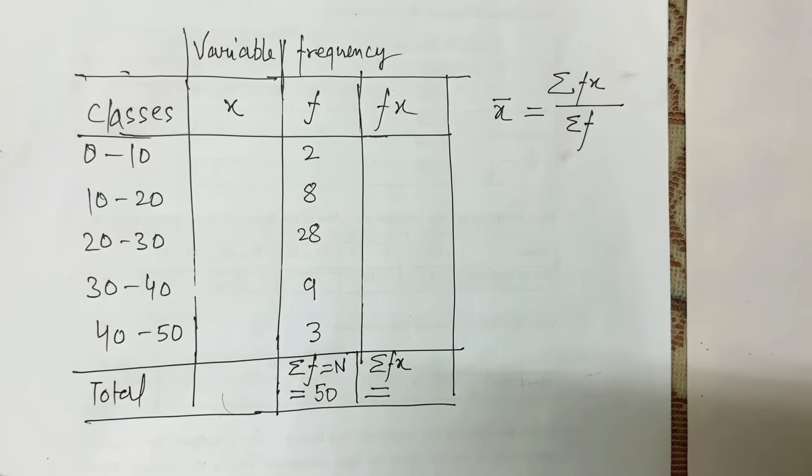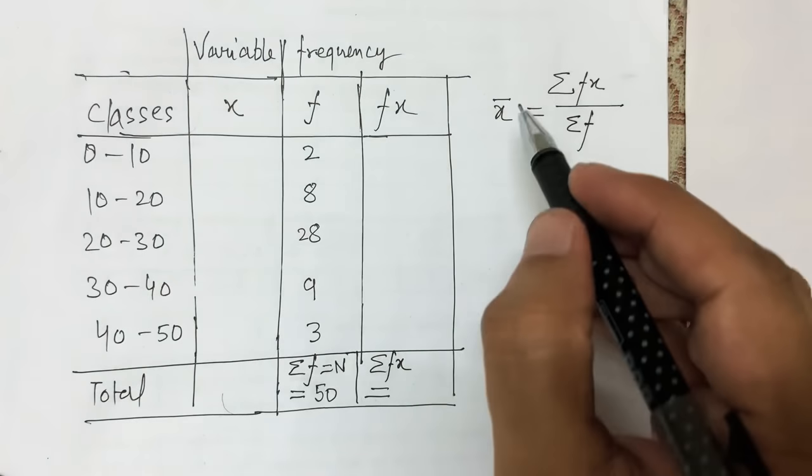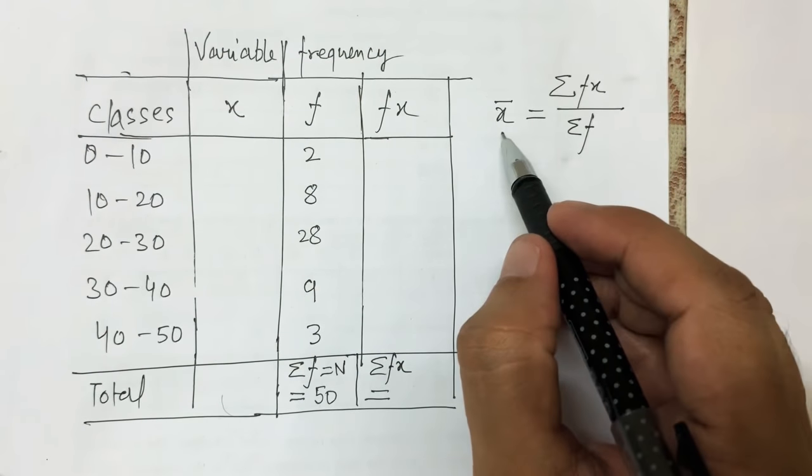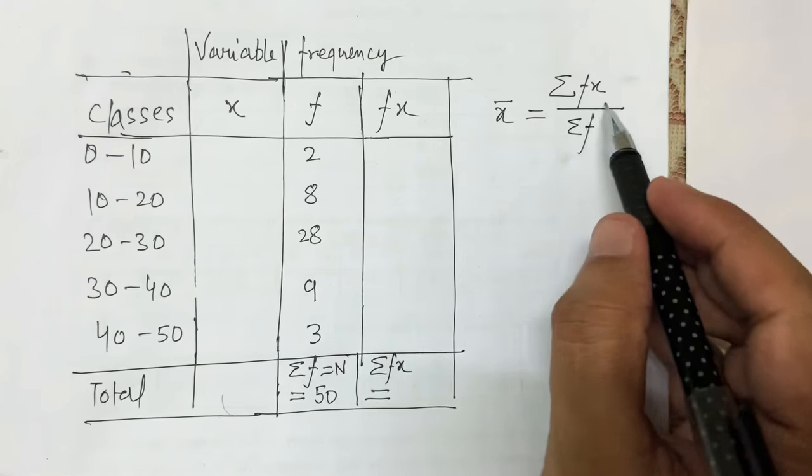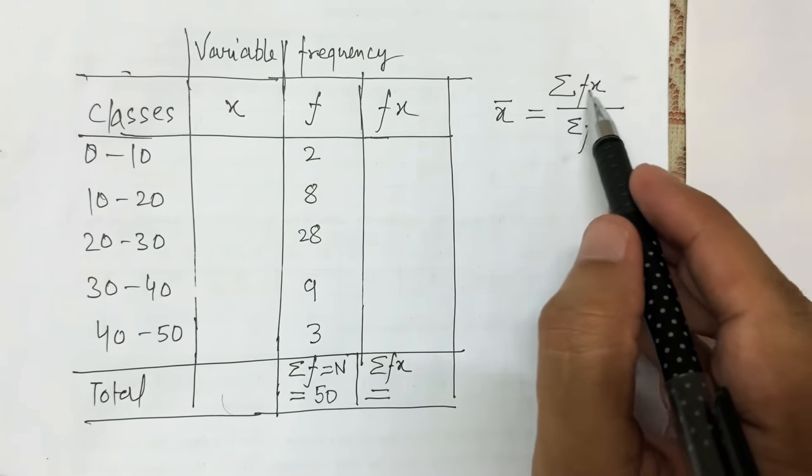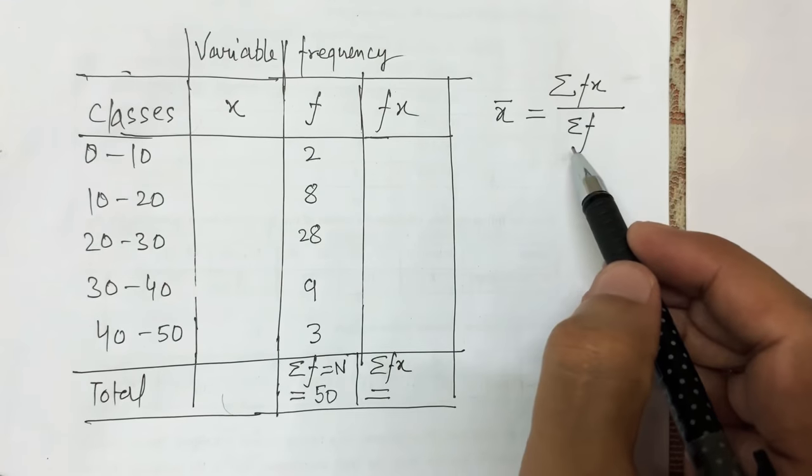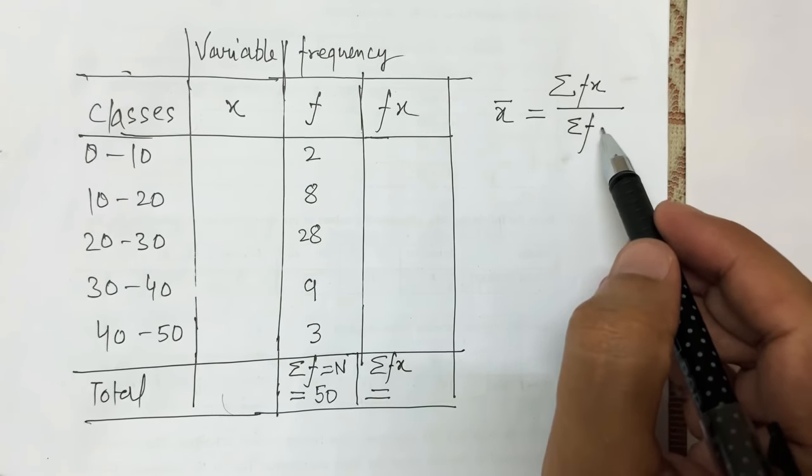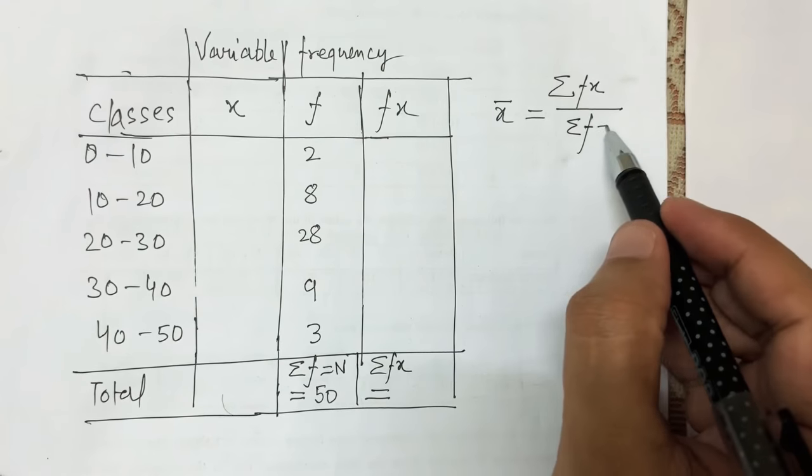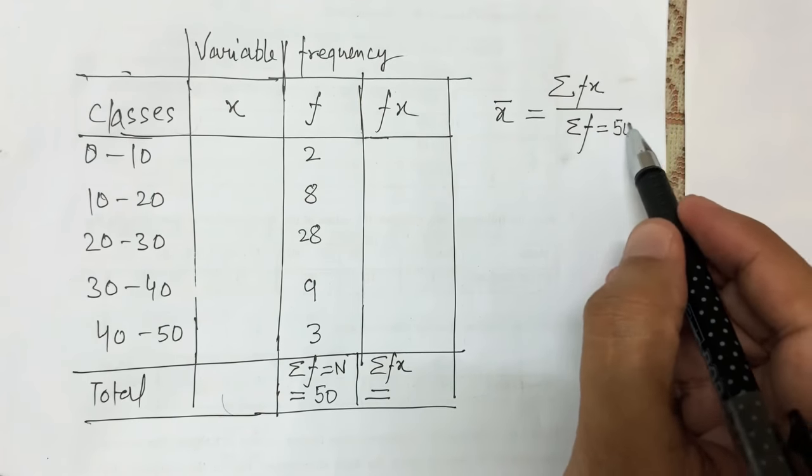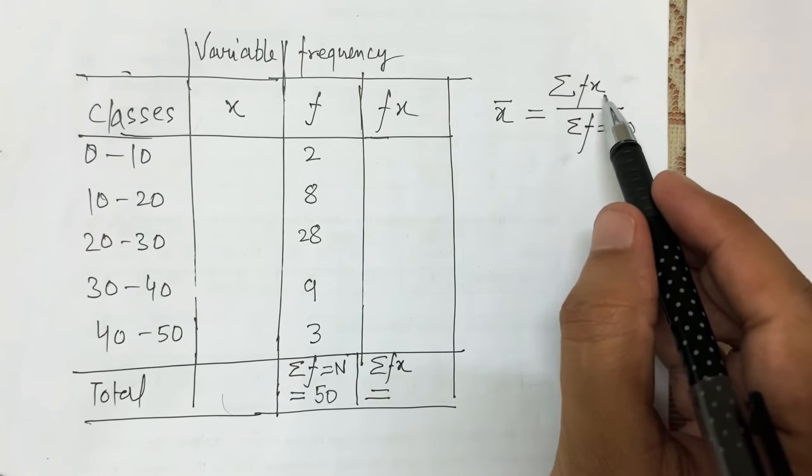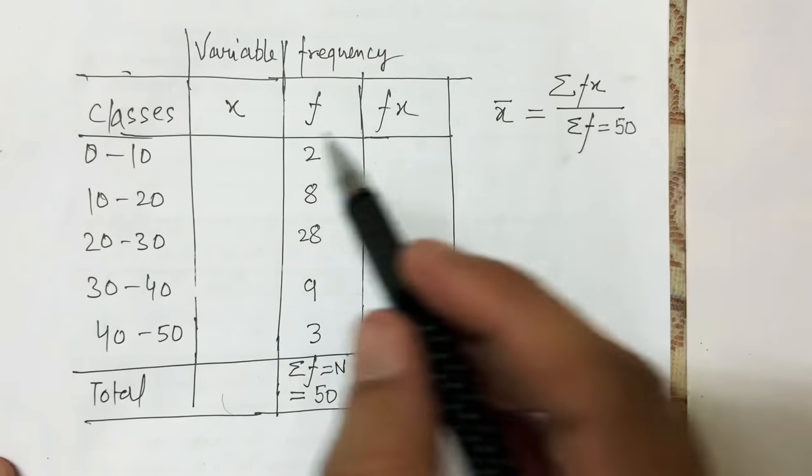I want to find the average marks, x̄. The formula is x̄ = Σfx/Σf. Summation of fx gives the total marks scored by all students, and sum of f gives the total number of students, which is 50. To get Σfx, I need the value of x. I don't have direct values, so I obtain the mid value.